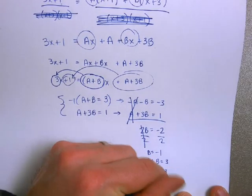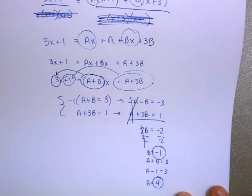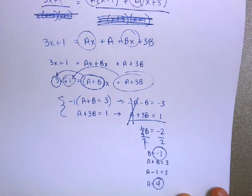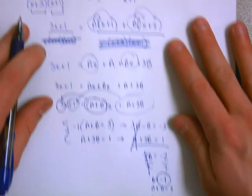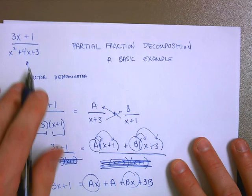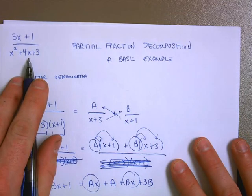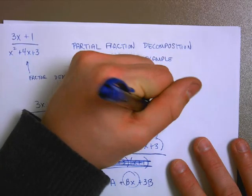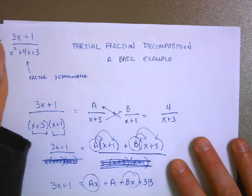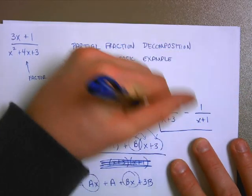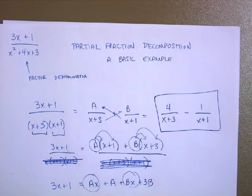So A must equal 4. So I found A, and I found B. Time to go plug those into my original equation. In the end, what it means is that we can write, we can write this entire fraction, 3x+1 over x squared plus 4x plus 3, we can write it as 4/(x+3) minus 1/(x+1). And that is our answer.